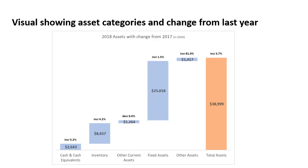Instead, use a visual like this. This visual allows executives and the board to easily see the comparison of the size of each asset category, and they can see how much each one increased or decreased from the previous year.